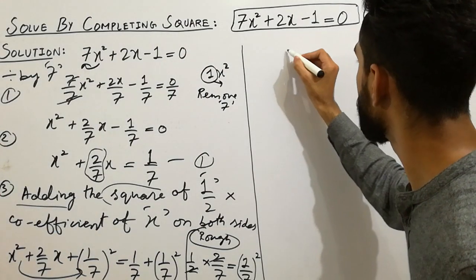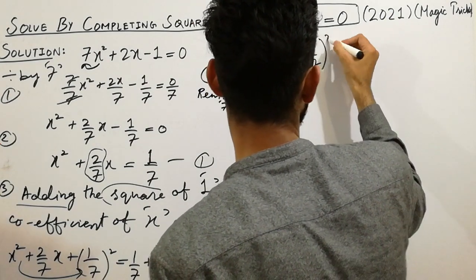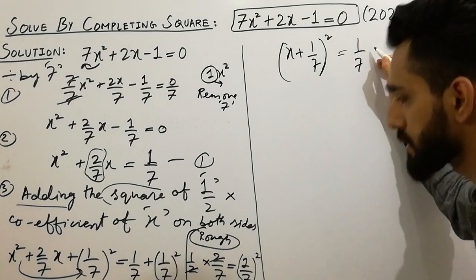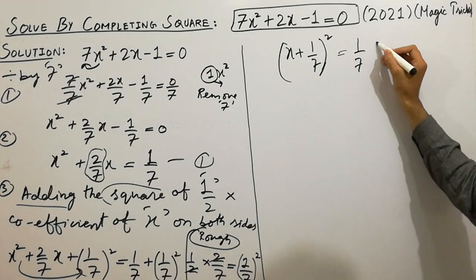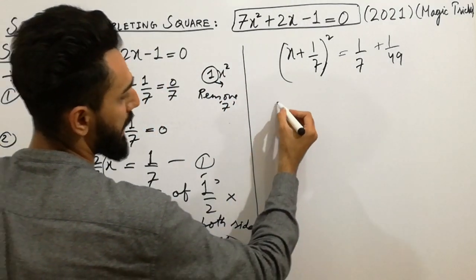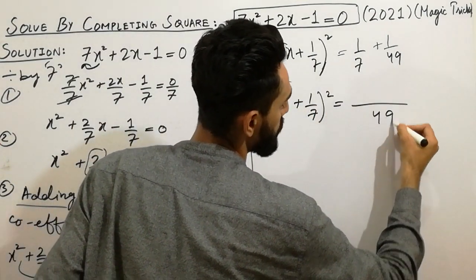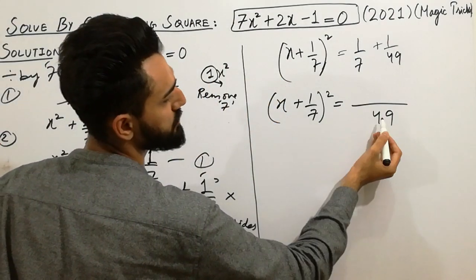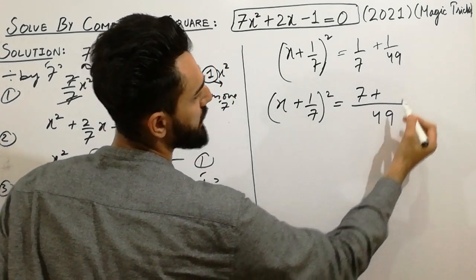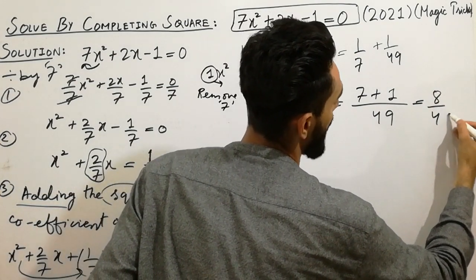Next step: x plus 1 over 7, completing scale, is equal to 1 over 7 plus 1 over 49. You have to take the LCM. The LCM of 7 and 49 is 49. So: 7 plus 1 over 49, which gives 8 over 49.